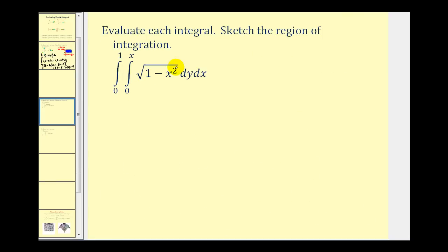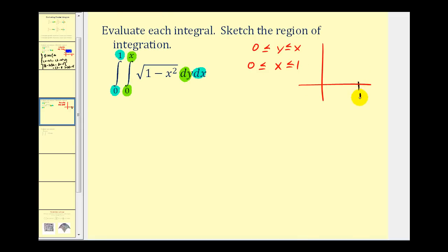Let's take a look at another example. Because we have dy here, y is between 0 and x, and x is on the closed interval from 0 to 1. It looks like we have a triangular region. x is between 0 and 1, but y is between 0 and x. If we graph y ≤ x, that's a line with slope 1 passing through the origin, and since the maximum value of x is 1, the maximum value of y is also 1. So our region of integration is the triangular region where x ∈ [0,1] and y ∈ [0,x].